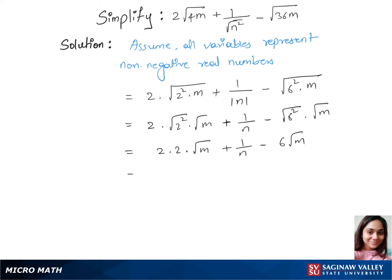In our next step we have 4 root m plus, let's write the like terms together, so that's minus 6 root m plus 1 over n.